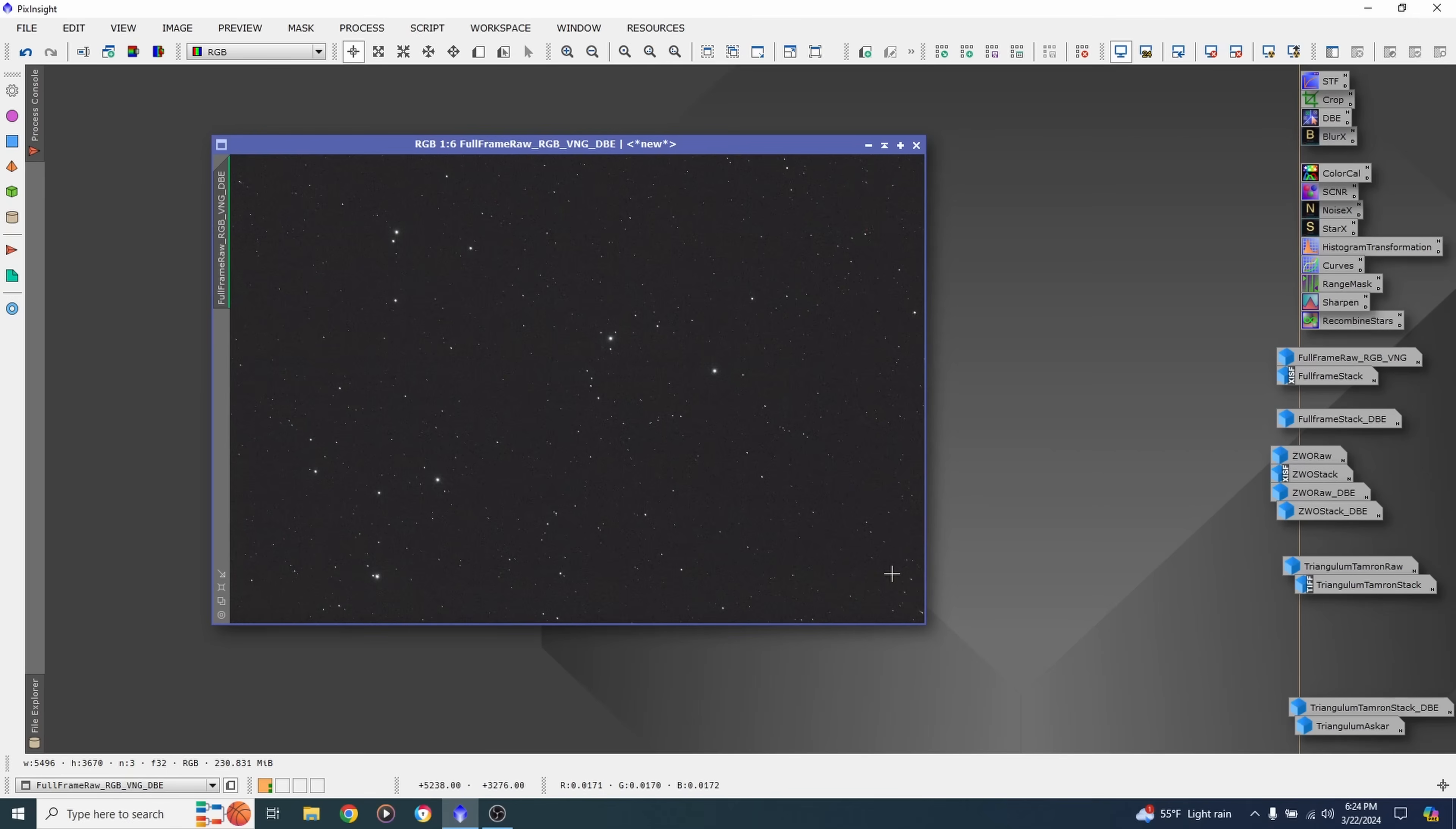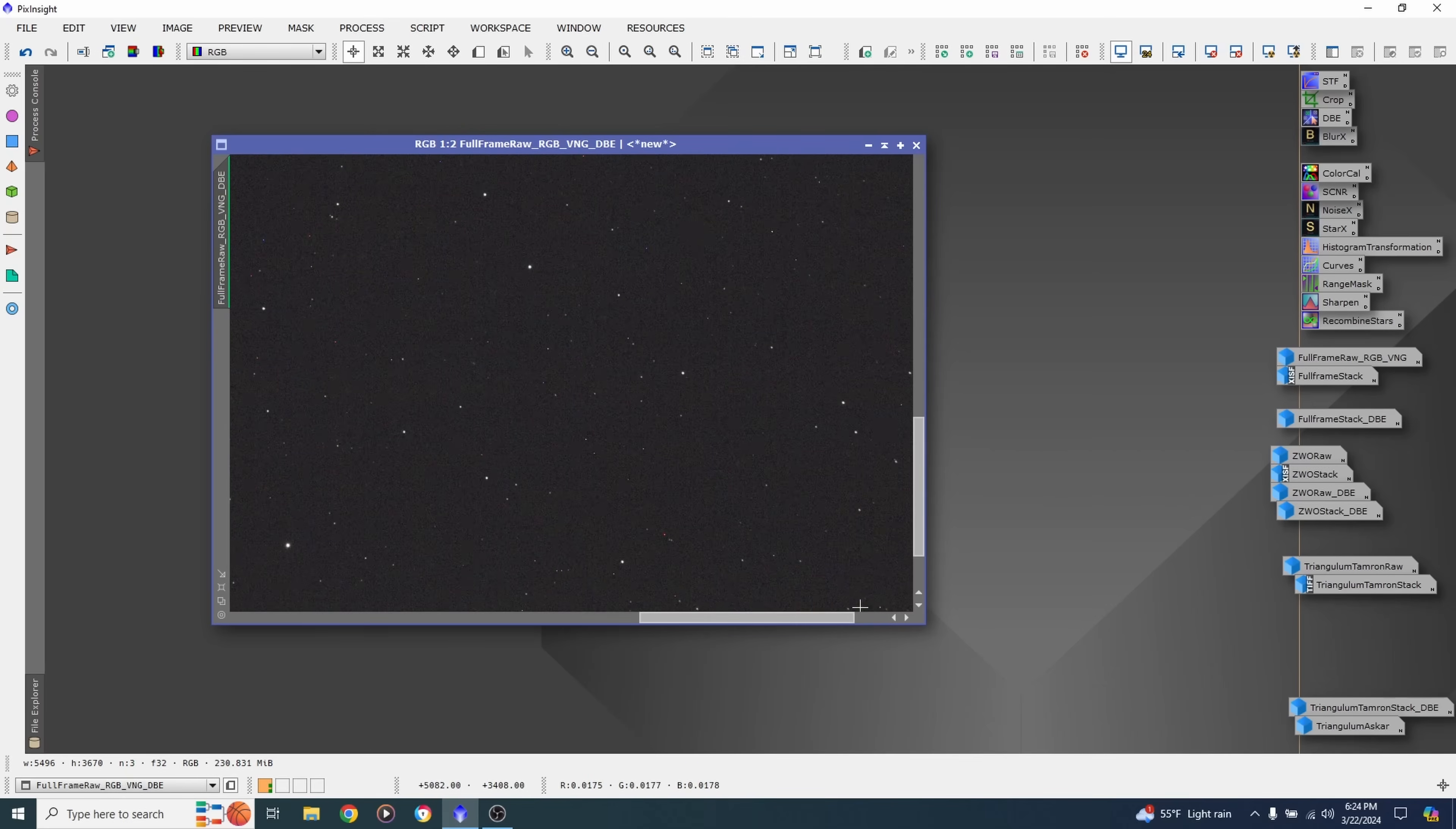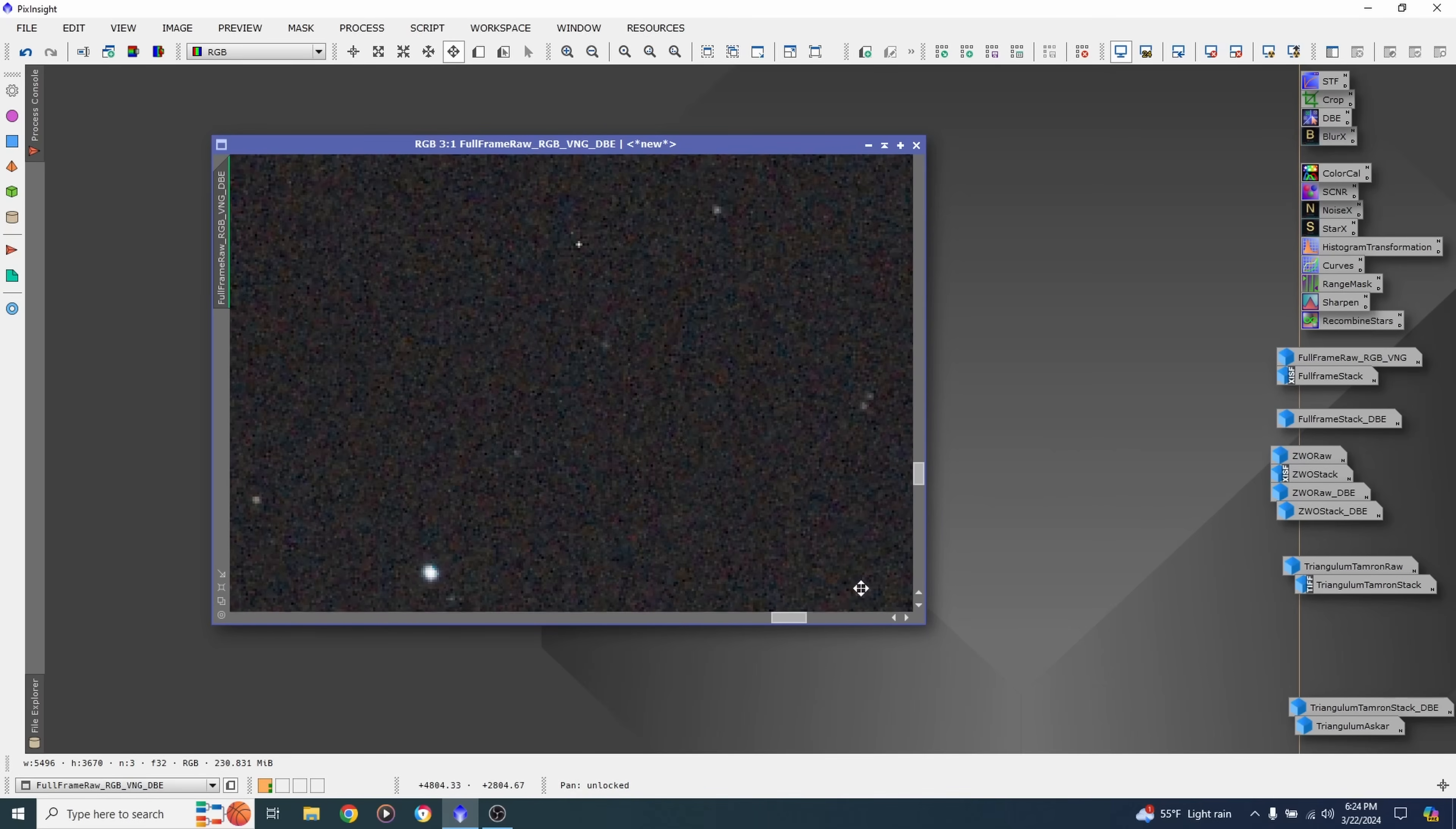But what I really want to focus on is the corners. Corners are where you start having problems, and the flattener is supposed to take care of that. But we'll see. Zoom right here. Okay, we see in the very, very corner, the stars are stretched out and have little comet tails. Zoom back out. But that's only in the very, very corner. We start moving away from that, and the stars start to lose their comet tail and they start getting round again.